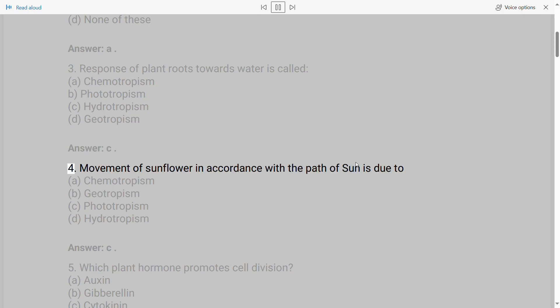4. Movement of sunflower in accordance with the path of sun is due to A. Chemotropism B. Geotropism C. Phototropism D. Hydrotropism. Answer: C.